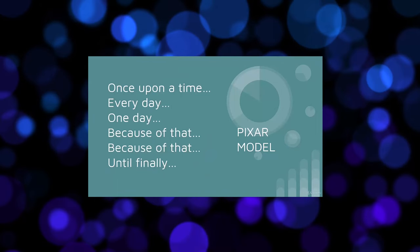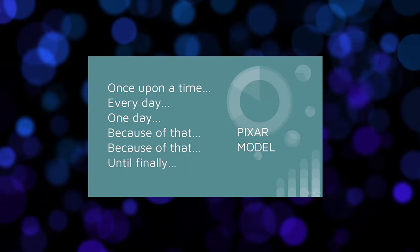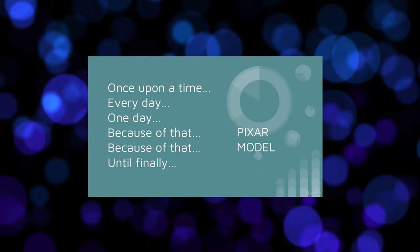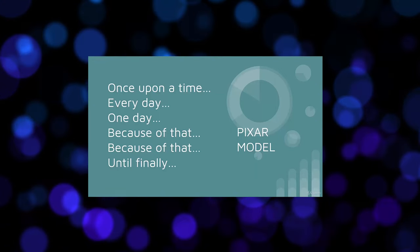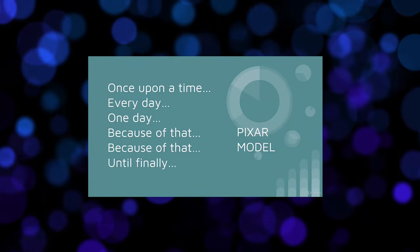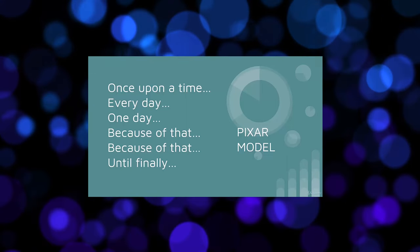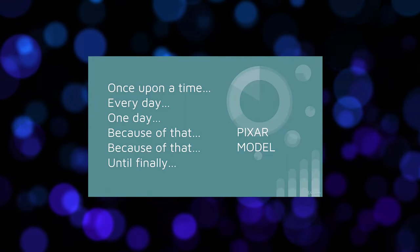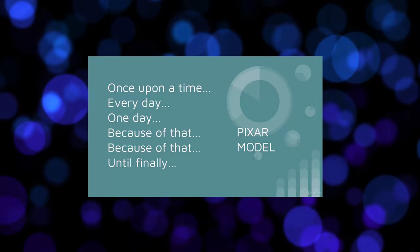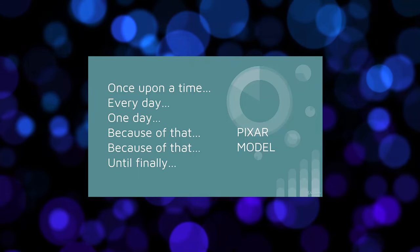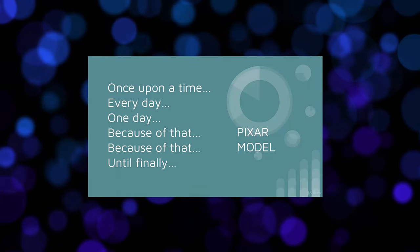My favourite model of structure is actually quite a simple one, ultimately pretty much based on the three act model, and this is one invented by the Pixar studios. We get a bit of a sense of the fairy tale about it. We have our 'once upon a time' and 'every day' — this is the status quo at the beginning of the story. Then we have our 'one day' where everything changes — the inciting incident where the rising action starts. And then 'because of that,' 'because of that,' until we get to our resolution — 'until finally.'